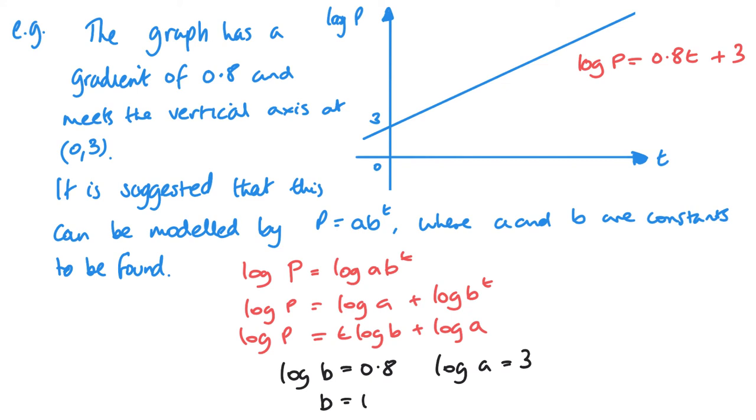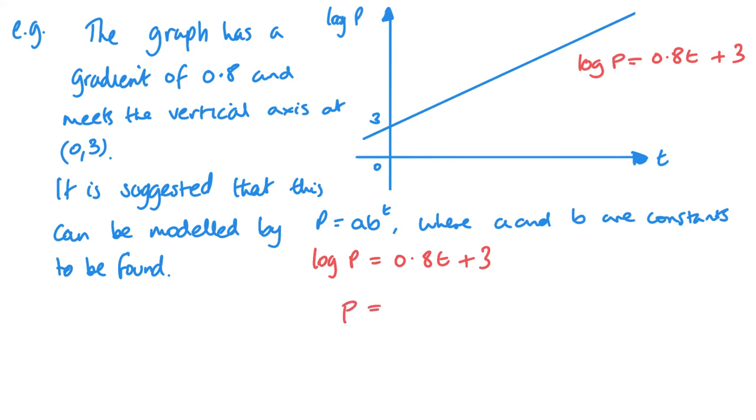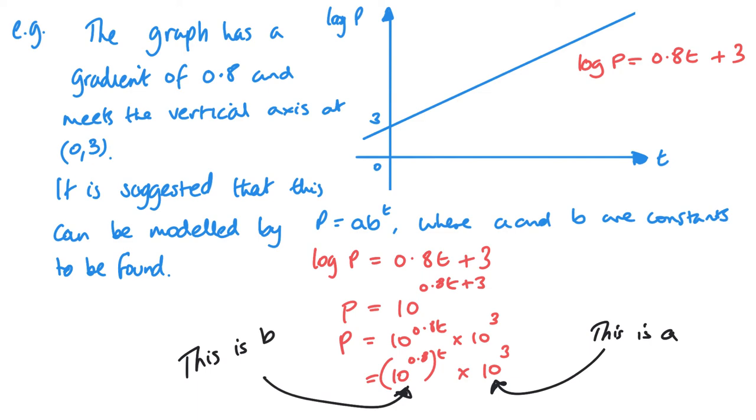Now an alternative way of getting this answer would be starting from the equation of a straight line. So if I started at this point, then I'd want to make P the subject, so I'm writing the logarithm as a power, so that's 10 to the power 0.8t plus 3. Then I'm going to split up my powers because I'm adding here, so that's the same as multiplying. So I've got 10 to the power 0.8t multiplied by 10 to the power 3. Then that is 10 to the power 0.8 to the power t times 10 cubed. And you can see that that is now the values that I wanted. You can see that this is b and this is a, and these are the same values that we had earlier with the other method.